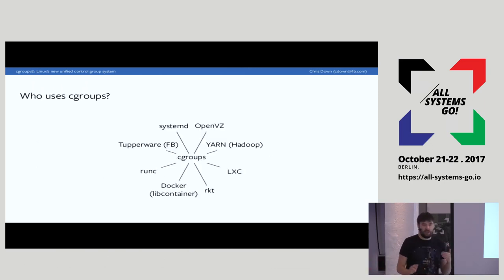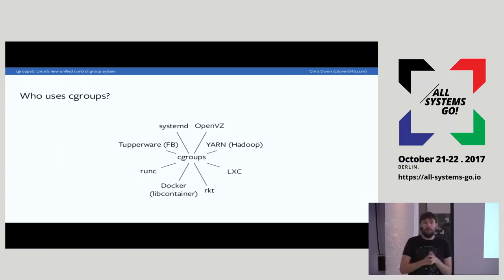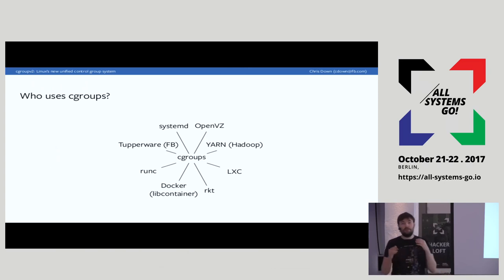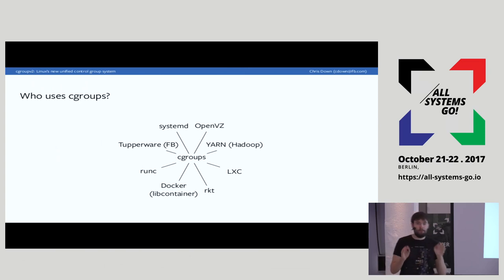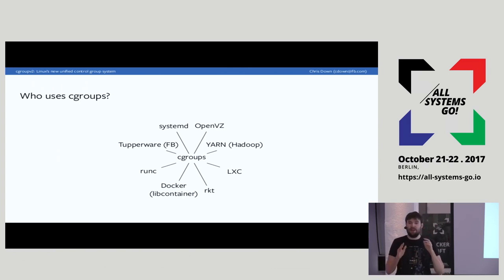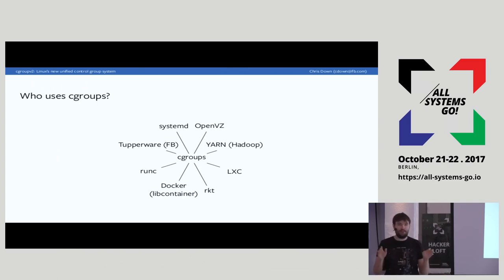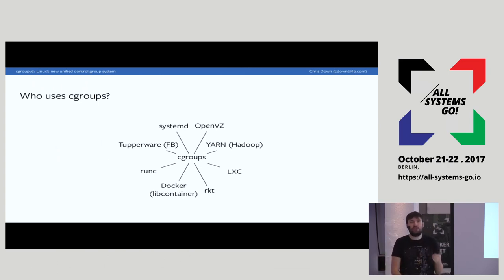Another use case is shared environments like VPS providers running containers, where you don't want one customer to override the needs of another. You might be thinking your favorite product already has this functionality — well, if it's been made in the last eight or nine years, it almost certainly uses Cgroups under the hood. Cgroups are the most mature interface we have in the kernel for resource management, and even if your product doesn't use them, it almost certainly should be at this point.